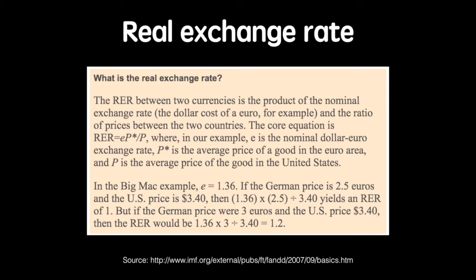But suppose the burger sells for 1.2 euros in Germany. That would mean it costs 20% more in the euro area, suggesting that the euro is 20% overvalued relative to the dollar. If the real exchange rate is out of whack — as it is when the cost is 1.2 — there will be pressure on the nominal exchange rate to adjust, because the same good can be purchased more cheaply in one country than the other. It would make economic sense to buy dollars, use them to buy Big Macs in the US at the equivalent of 1 euro, and sell them in Germany for 1.2 euros. Taking advantage of such price differentials is called arbitrage. As arbitragers buy dollars to purchase Big Macs to sell in Germany, the demand for dollars will rise, as will its nominal exchange rate, until the price in Germany and the US is the same. The real exchange rate returns to 1.